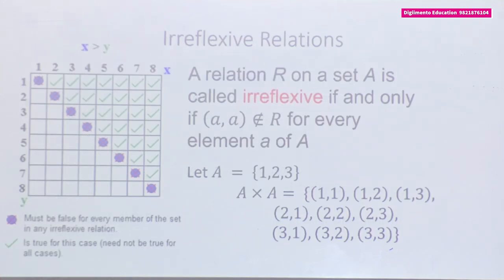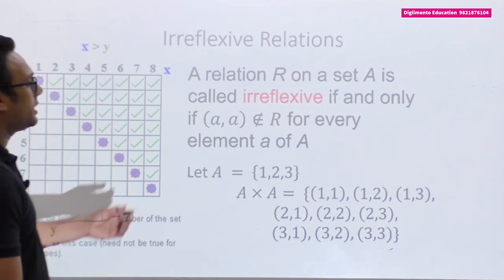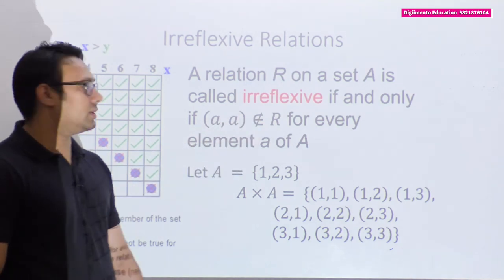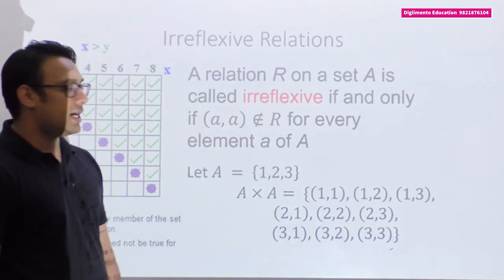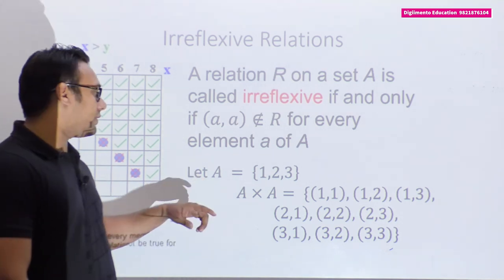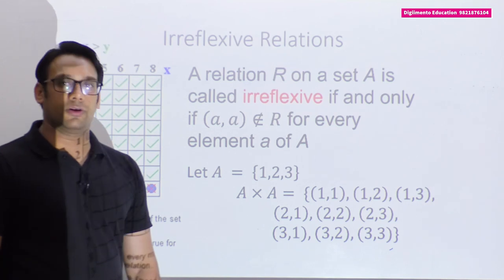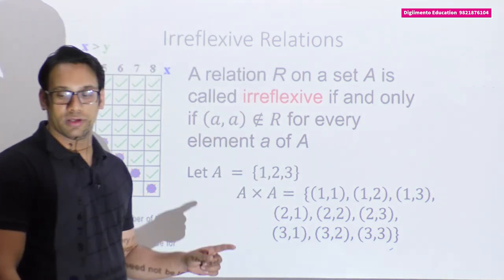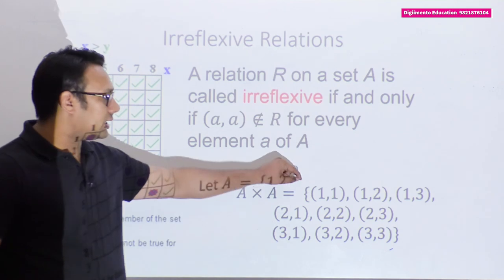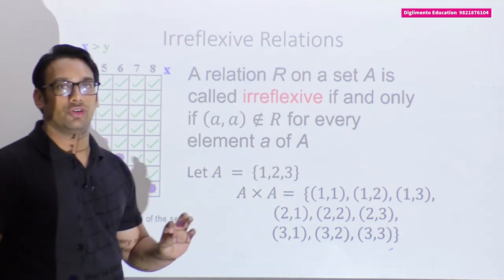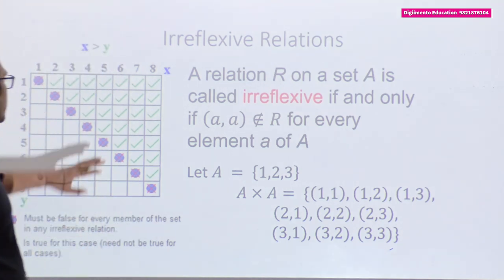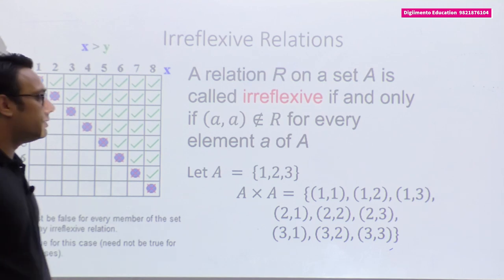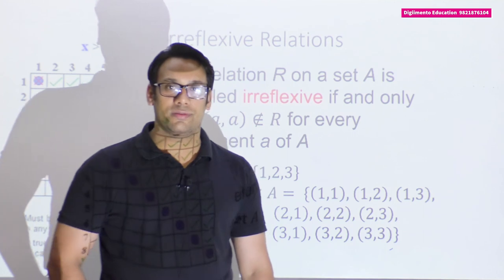This is the definition of an irreflexive relation. We say a relation R on a set A is called irreflexive if and only if (a, a) does not belong to the relation for every element a in set A. A relation will be irreflexive if and only if none of the diagonal elements are present. If any one diagonal element is present, the relation is not irreflexive.